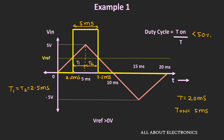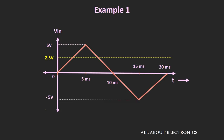This can be found by calculating the slope of the triangular wave. In 5 ms the output reaches from 0 to 5V, so the slope is 5V / 5 ms = 1 V/ms. Therefore, in 2.5 ms the voltage reaches 2.5V. So the reference voltage should be equal to 2.5V, which keeps the output on for 5 ms and achieves a 25% duty cycle.